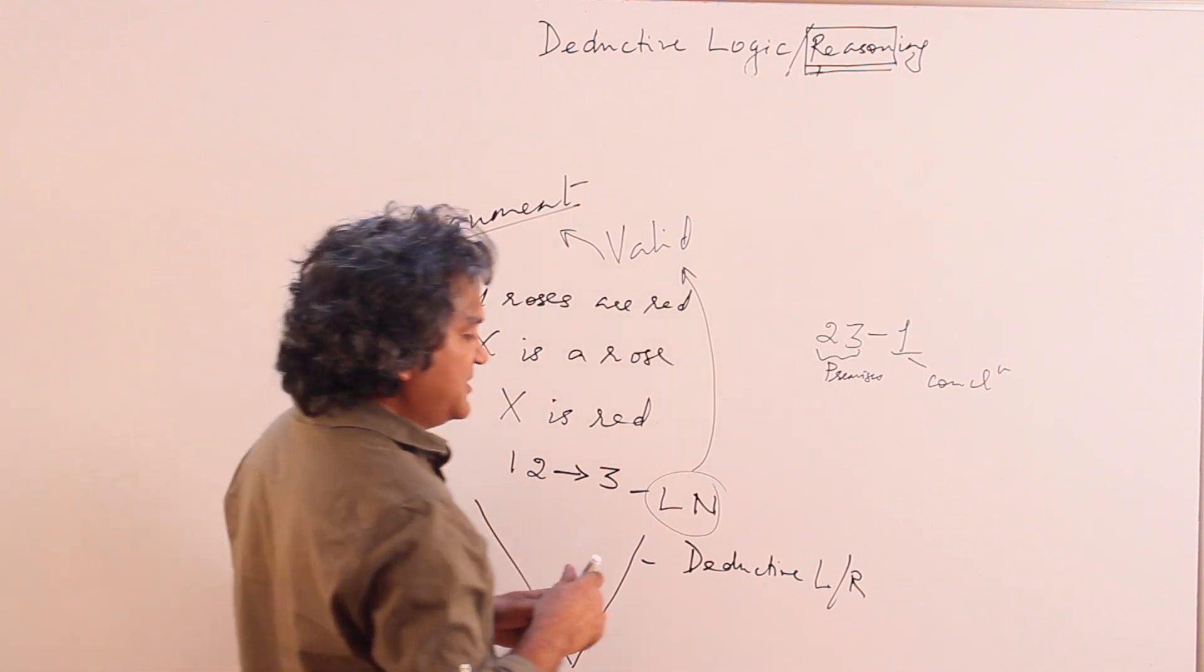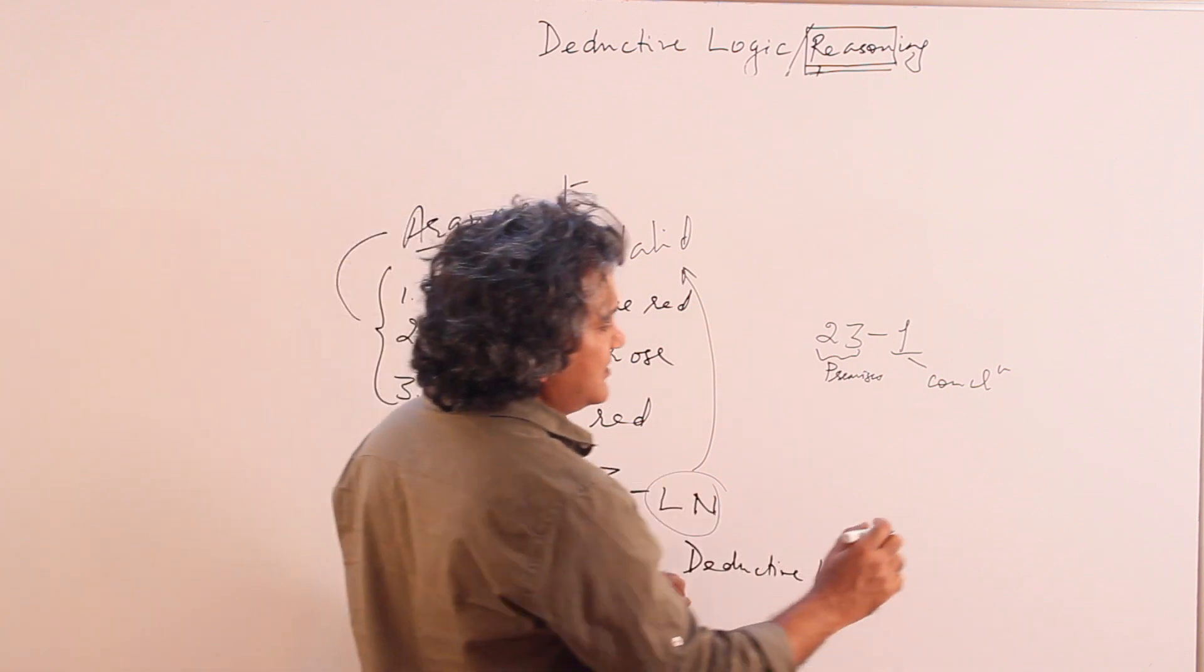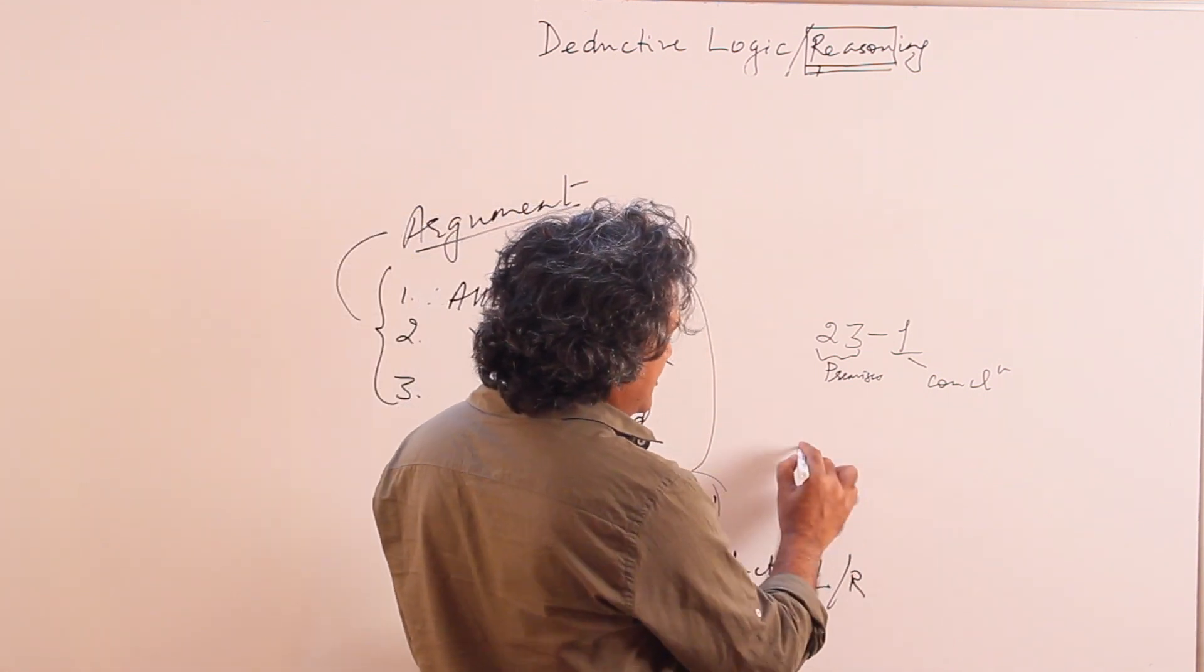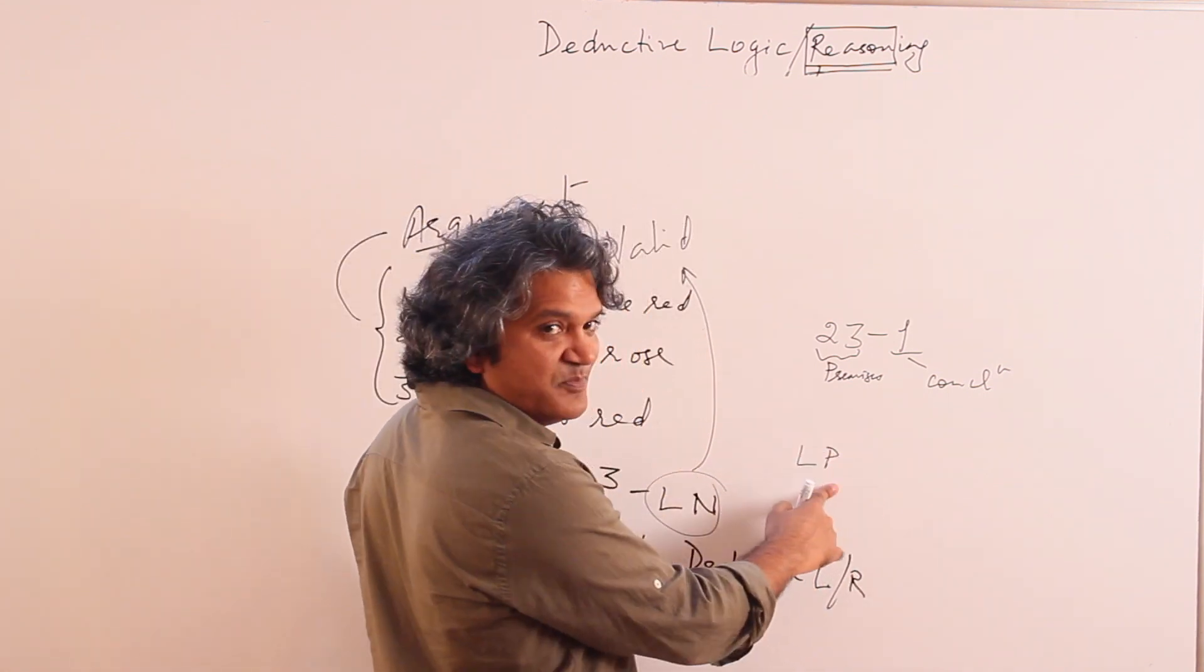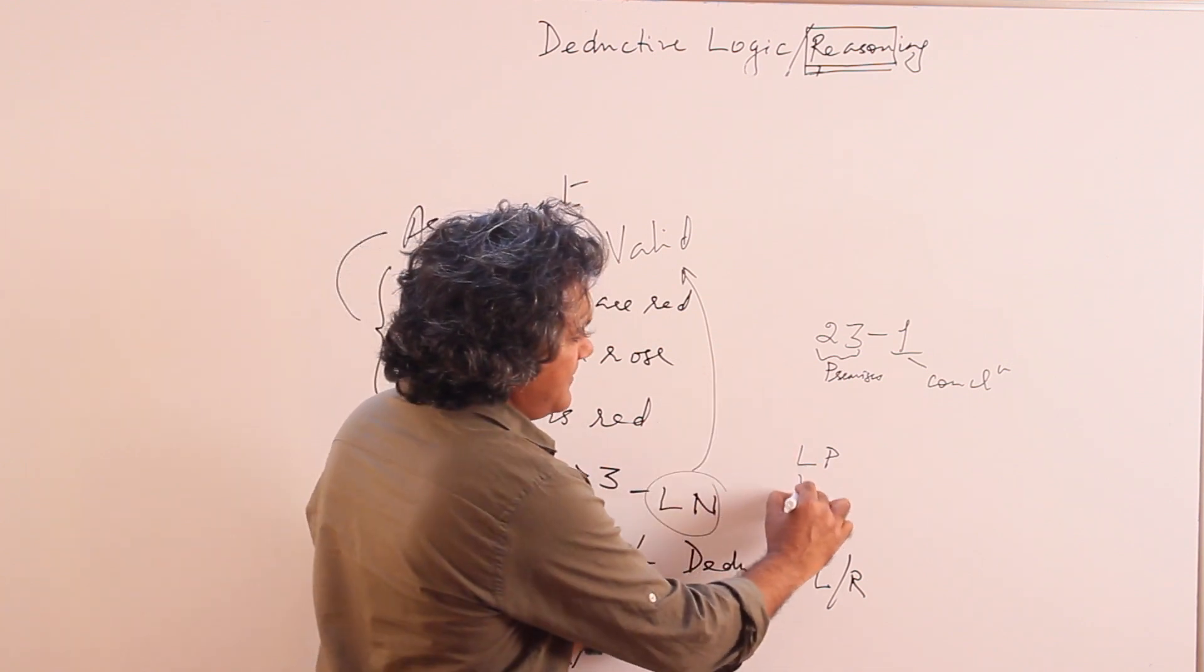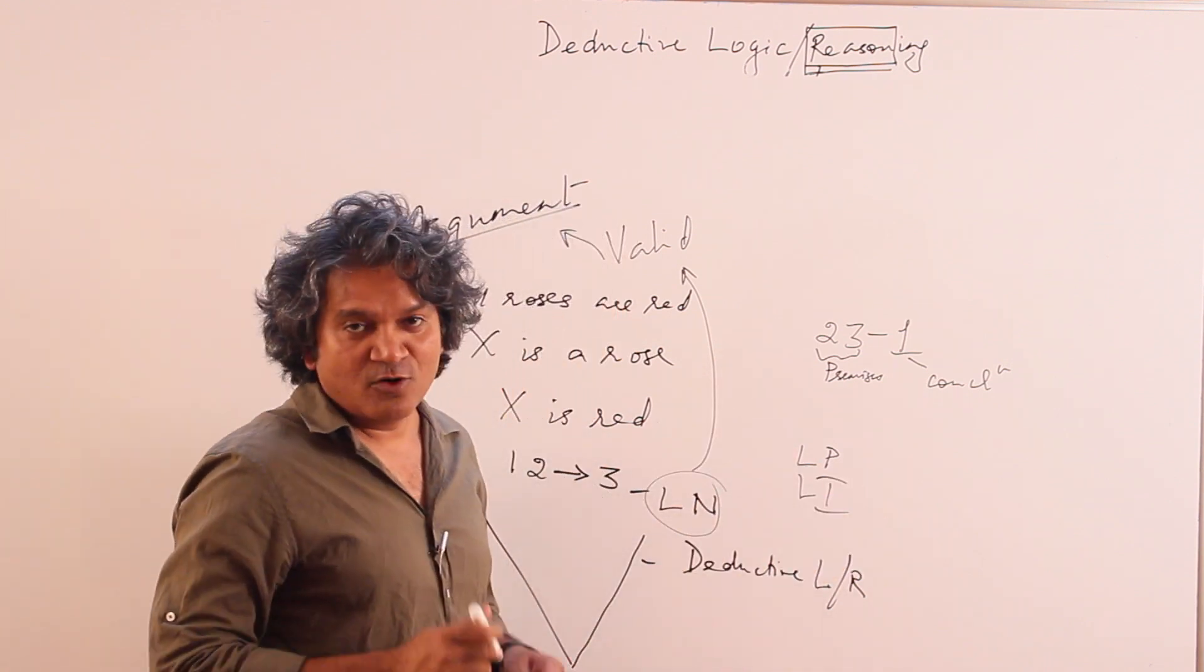There are two possibilities. Just like this was logically necessary, we have two possibilities: logically possible, LP, logically possible; and LI, logically impossible.